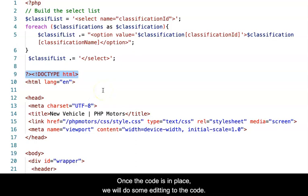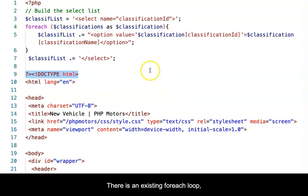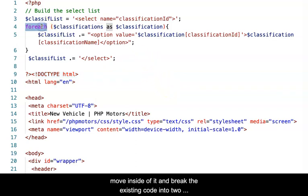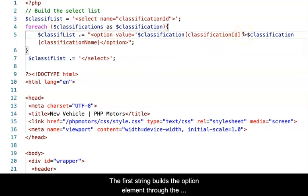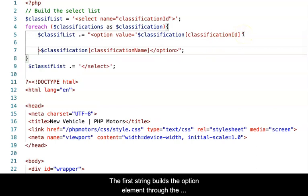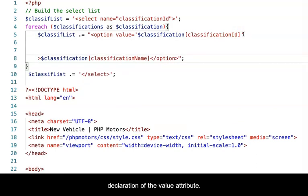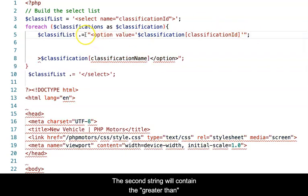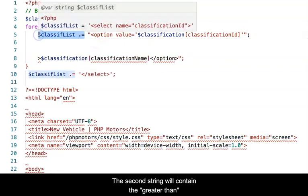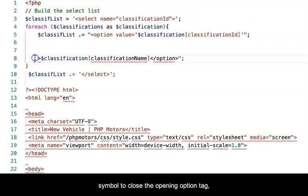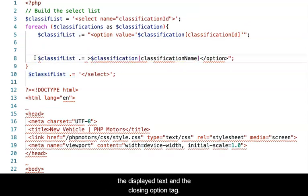Once the code is in place, we will do some editing to that code. There is an existing for each loop. Move inside of it and break the existing code into two separate strings. The first string builds the option element through the declaration of the value attribute. The second string will contain the greater than symbol to close the opening option tag, then the displaying text, and then the closing option tag.